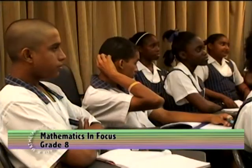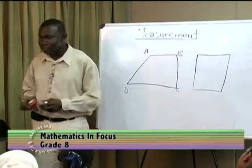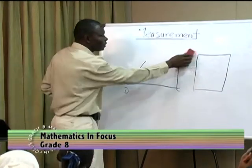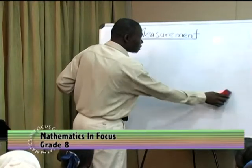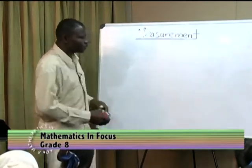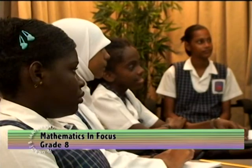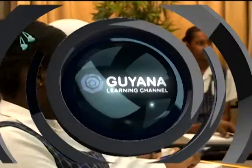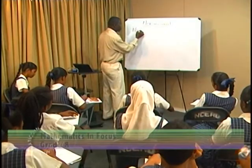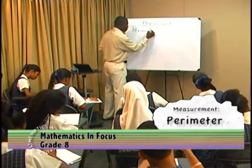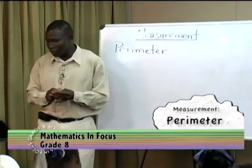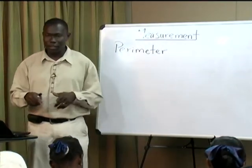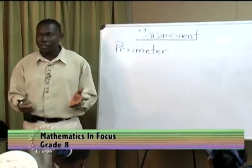Yes, sir. What about for your house? Yes, sir. What about for the yard which you're living in? Can you find the distance around it? Yes, sir. Good. So, once you find the distance around the closed shape, that is called a perimeter. So, that's what we will be looking at today. And, as a student rightly pointed out, the perimeter is the distance around a given closed shape or a plain figure.